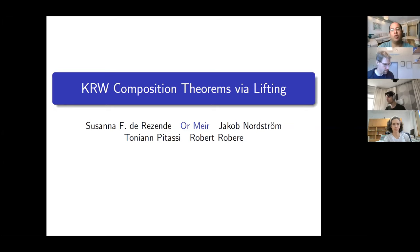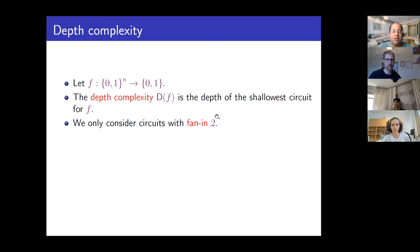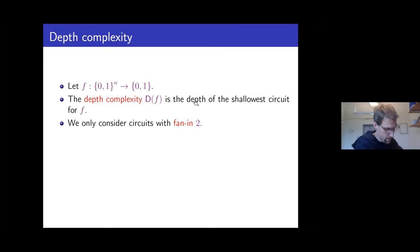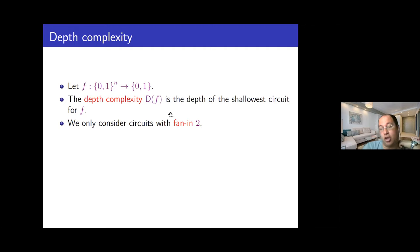This talk is about the KRW composition theorem via lifting — I'll explain both parts of the title in a few moments. The subject of this talk is circuit complexity, and one of the most important frontiers of circuit complexity is depth complexity. In this setting, we ask what's the minimal depth we need to compute functions. The depth of a circuit is the length of the shortest path from an input gate to the output gate. The depth complexity of a function is the depth of the shallowest circuit that computes f, and we are trying to prove lower bounds on it.